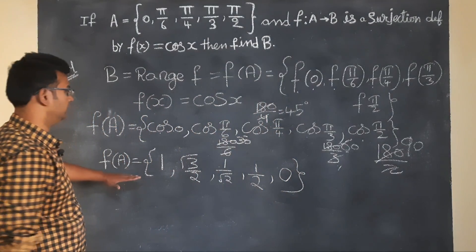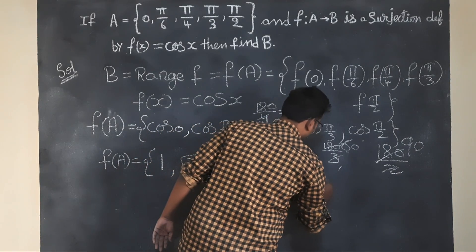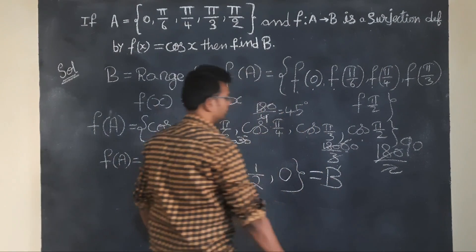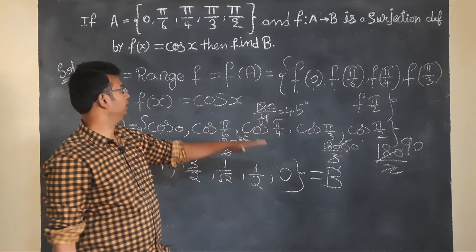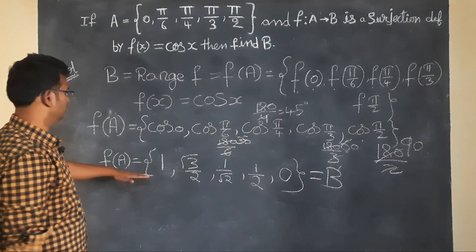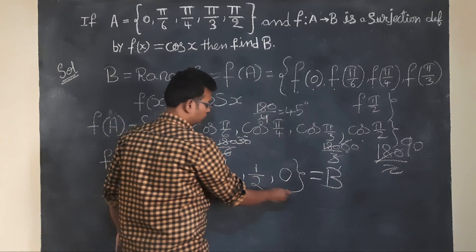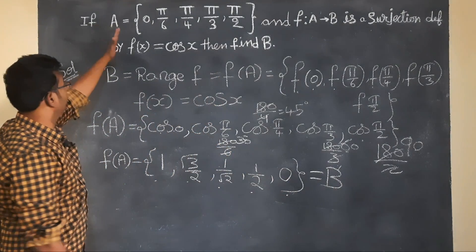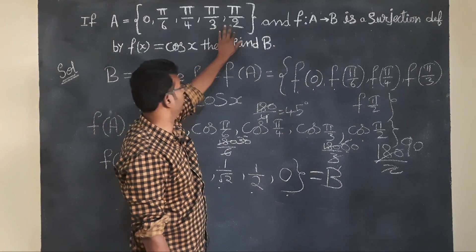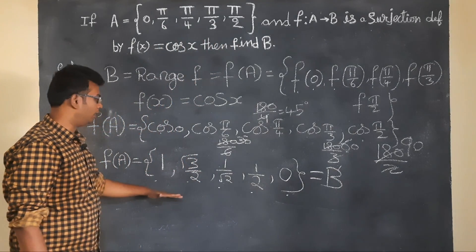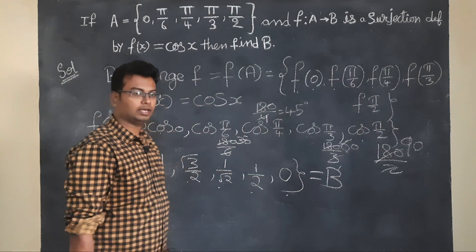So B = f(A) = {1, √3/2, 1/√2, 1/2, 0}. For A = {0, π/6, π/4, π/3, π/2}, the B set is {1, √3/2, 1/√2, 1/2, 0}.